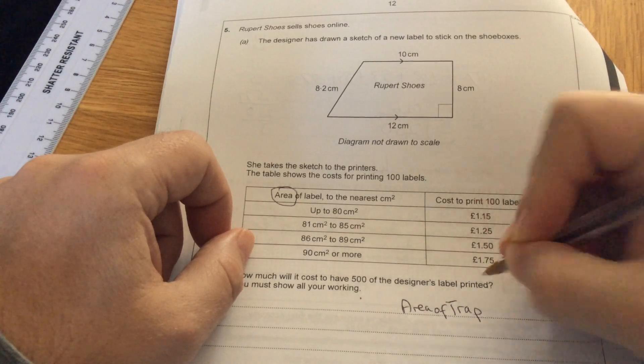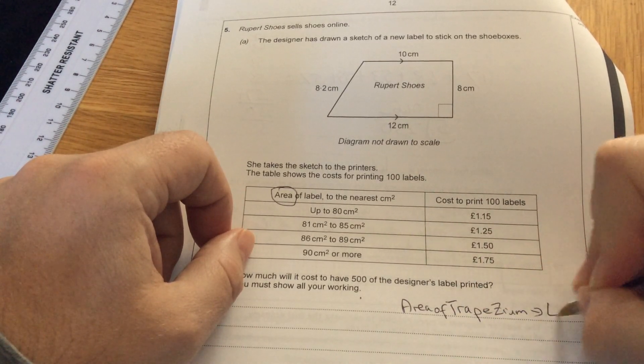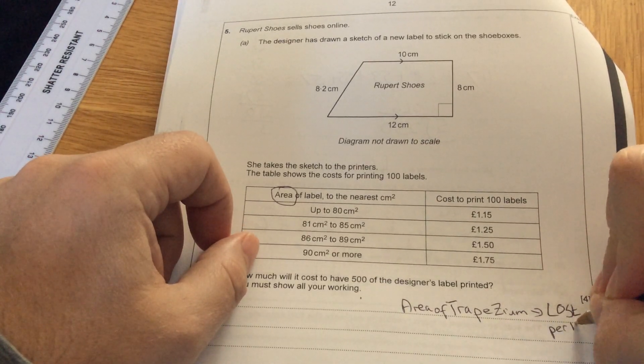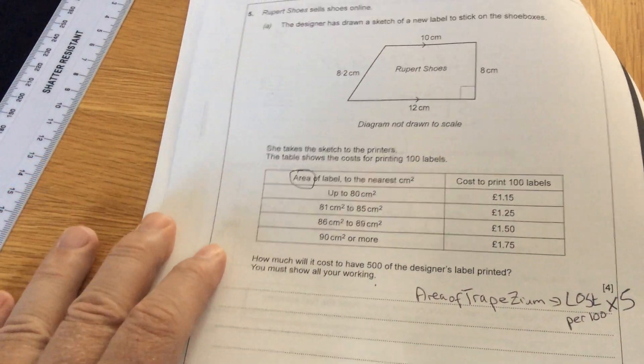So what I need to do is find the area of the trapezium. Once I've got the area of the trapezium, I'm going to work out the cost per 100 labels, and then times it by five because I want 500. When working out the area of a trapezium, I go back to the front cover, it gives me the formula.